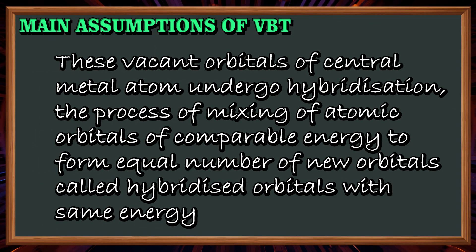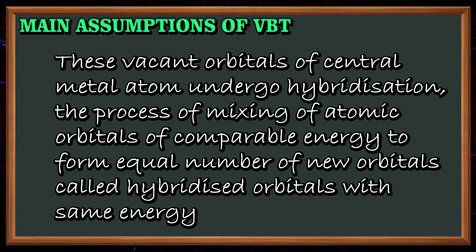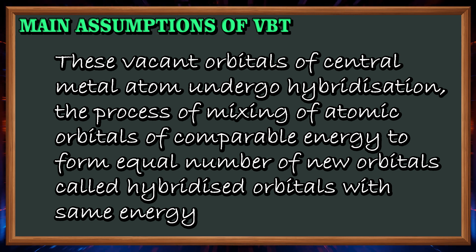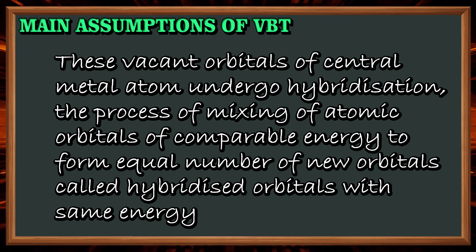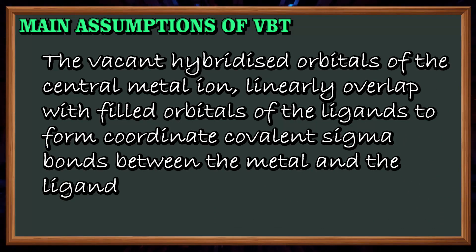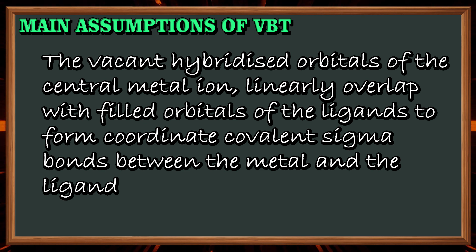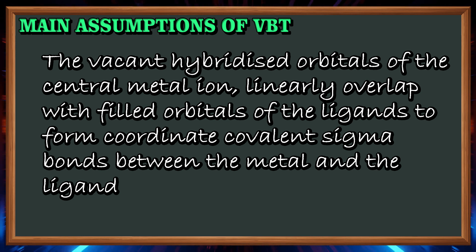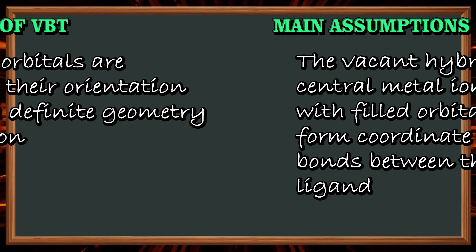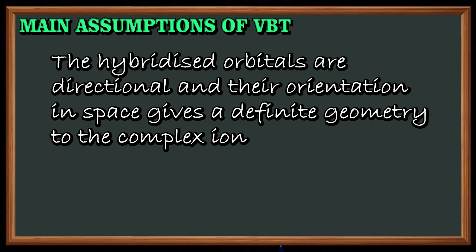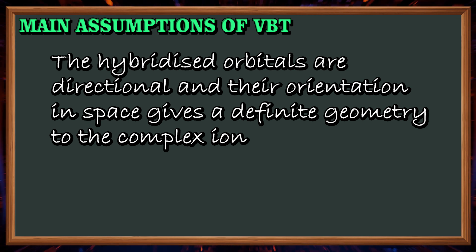These vacant orbitals of the central metal atom undergo hybridization — the process of mixing of atomic orbitals of comparable energy to form an equal number of new hybridized orbitals with the same energy. The vacant hybridized orbitals of the central metal ion linearly overlap with the filled orbitals of the ligands to form coordination covalent sigma bonds. The hybridized orbitals are directional and their orientation in space gives a definite geometry to the complex ion.